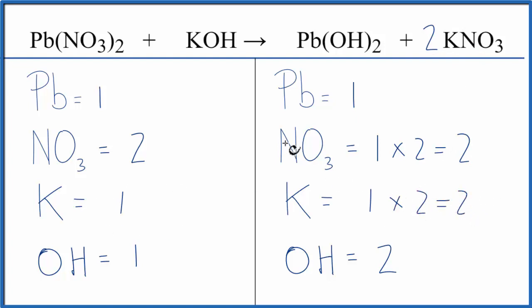Let's fix the potassiums. We put a coefficient of two in front of the potassium hydroxide, one times two. That'll give us two of the potassiums, so those are balanced. Two applies to everything. The one hydroxide times the two gives us two of those, and we're done. This equation is balanced.